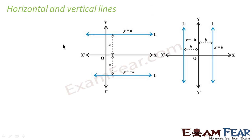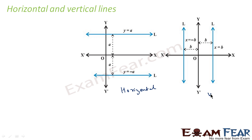Now, horizontal and vertical lines. Any line which is parallel to the x-axis is a horizontal line, and any line which is parallel to the y-axis is called a vertical line. So this is vertical lines, and this is horizontal lines.